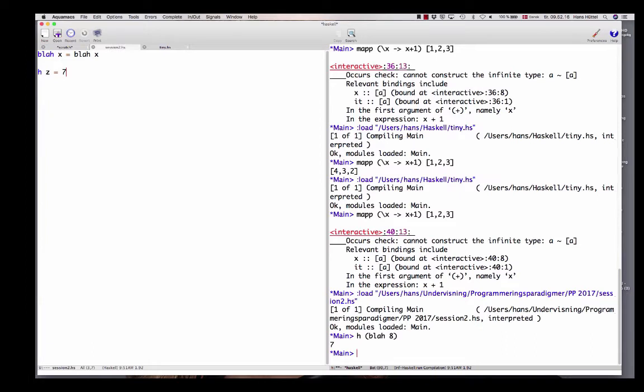Which is perhaps surprising because blah of 8 is not a well-defined value. But because we've got lazy evaluation, we never need to evaluate blah of 8. So there is no problem here.